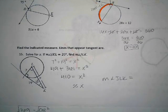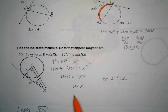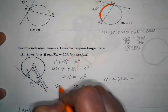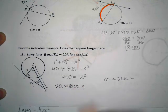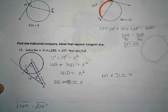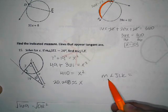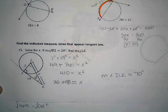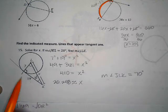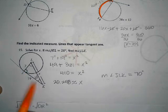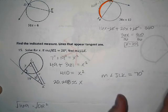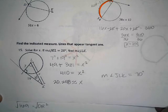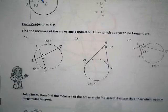Anybody want to share what they got for X on number 15? 20.248 - I heard that from a few people. Anyone get something different? 22.248. What do we get for the missing angle? 70. Everyone get 70 for the missing angle? We know this is 90, and then we know the whole triangle is 180. On the other side, what did we get for Y? We got 26.